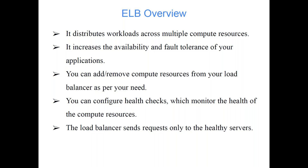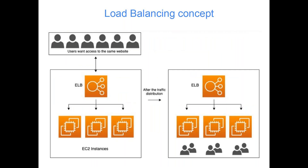Looking at this diagram: there are six users all wanting to access the same website. There is one ELB — Elastic Load Balancer — and behind it there are three EC2 instances. Because ELB distributes the load, it ensures two users' requests go to the first server, two go to the second, and the remaining two go to the third. None of the systems are overloaded, and the load is evenly distributed among the available servers.